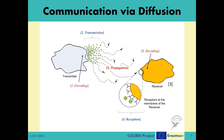Let us formalize the system based on the five-step communication model described earlier. In the CVD system, the message is encoded upon the messenger molecules inside the transmitter device and translated into a bitstream. At each time step, based on the current bit value of the message, the transmitter releases a certain number of messenger molecules to the environment — constituting the transmission step. These molecules move through the environment following the diffusion dynamics as the propagation step. Some arrive at the receiver device, where reception is handled by the formation of chemical bonds between the messenger molecules and corresponding receptors at the receiver's cell membrane. The message is then translated back into a bitstream, and finally the receiver device decodes the information from the received bitstream.